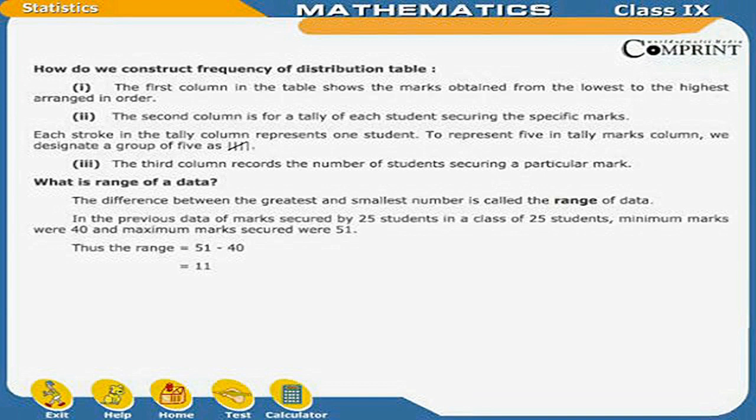The difference between the greatest and the smallest number is called the range of the data. In the previous data of marks secured by 25 students, minimum marks were 40 and maximum marks were 51. Thus, the range equals 51 minus 40, which is 11.